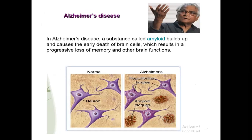Then we have Alzheimer's disease. In Alzheimer's disease, a substance called amyloid builds up and causes the early death of brain cells, which results in the progressive loss of memory and other brain functions. In this disease, an amyloid substance forms, which causes brain cells to die, resulting in loss of memory and improper functioning - this is also called amyloid plaque. Here you can see a normal brain with clear neurons, and then the Alzheimer's disease patient's brain where amyloid plaque is visible between neurons, causing improper brain functioning.